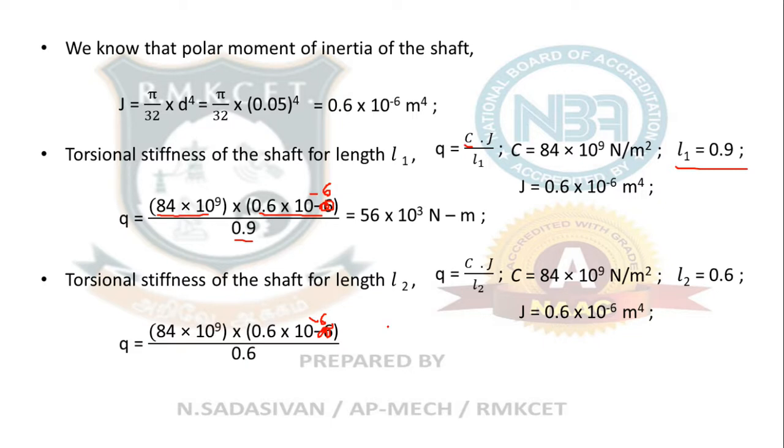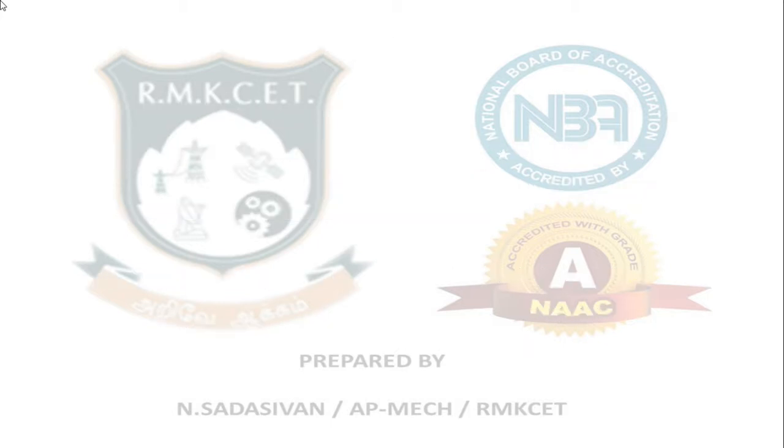Now C × J/L, length alone is different here, 0.6. That gives me a torsional stiffness of 84 × 10³ N·m. With these two values of q, I am going to move on.